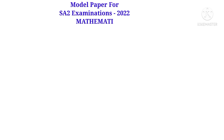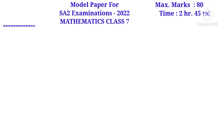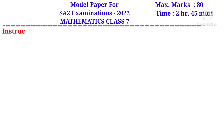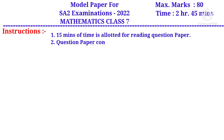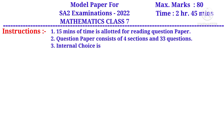Now let us see the model paper for SA2 examinations 2022, Mathematics for Class 7. Maximum marks is 80 and time allotted is 2 hours 45 minutes. Instructions: 15 minutes of time is allotted for reading the question paper. The question paper consists of 4 sections and 33 questions. Internal choice is available only for 8 marks questions.